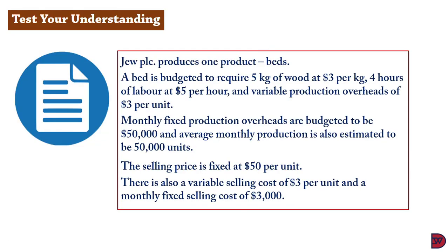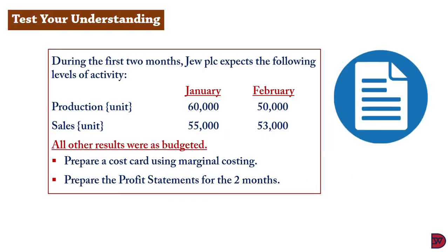Let's test understanding. Geo PLC produces one product — a bed. A bed is budgeted to require 5 kg of wood at $3 per kg, 4 hours of labor at $5 per hour, and variable production overheads of $3 per unit. Monthly fixed production overheads are budgeted at $50,000, and average monthly production is estimated at 50,000 units. The selling price is fixed at $50 per unit, with a variable selling cost of $3 per unit and a monthly fixed selling cost of $3,000.